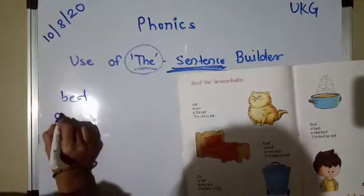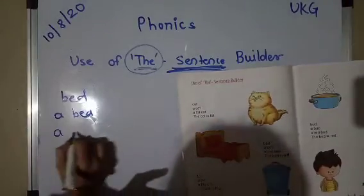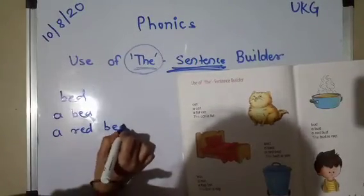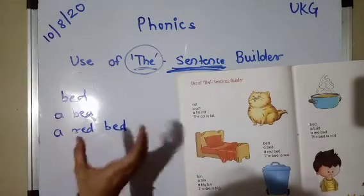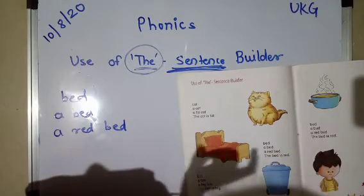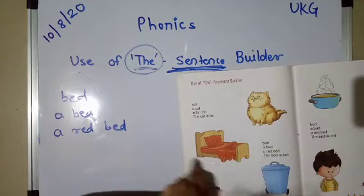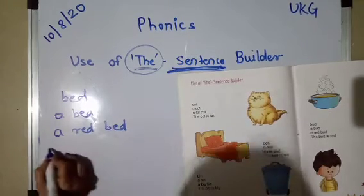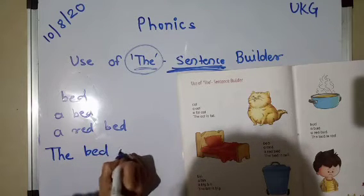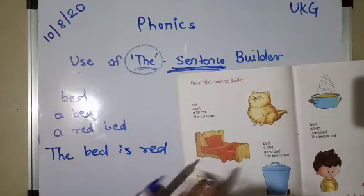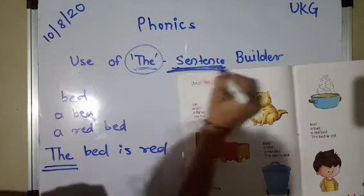A bed. A red bed — the color of the bed is red. So we say 'a red bed'. But it's just about a thing; it's not a sentence. When we make a sentence and we want to talk about this specific bed, we use 'the': 'the bed is red'. This bed's color is red. So we use 'the' to make a sentence.